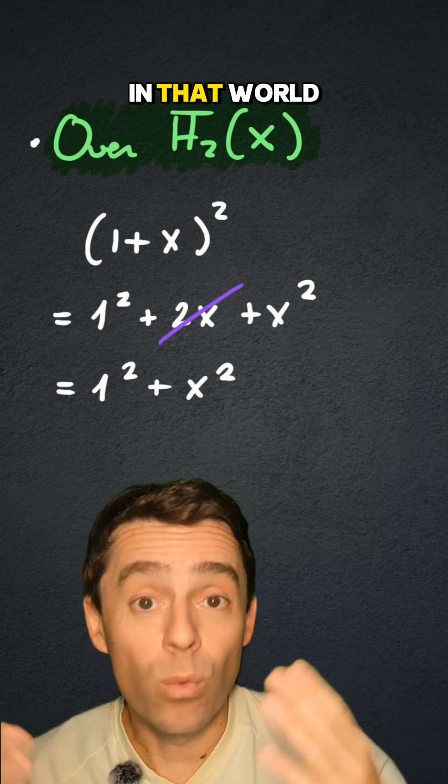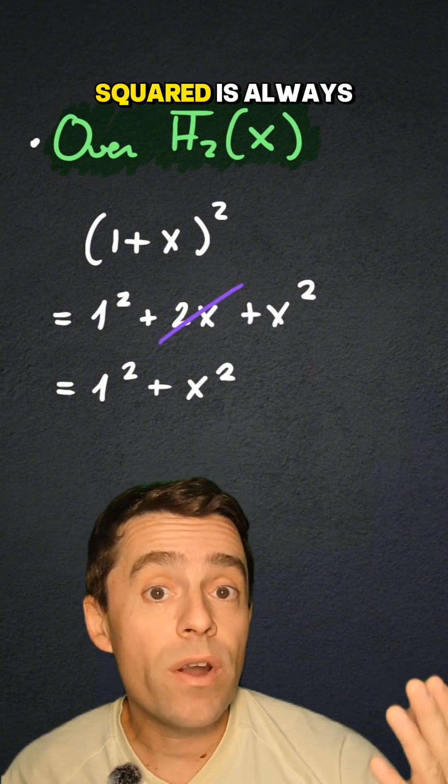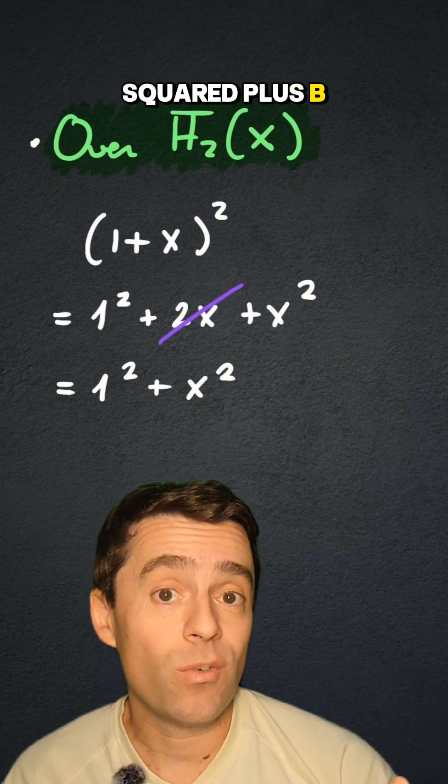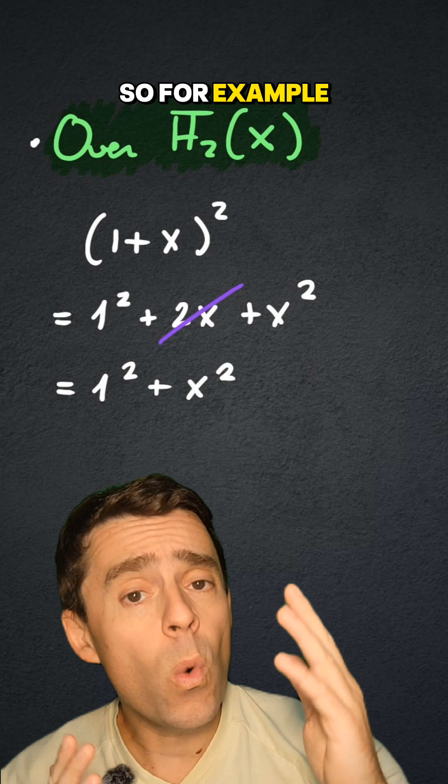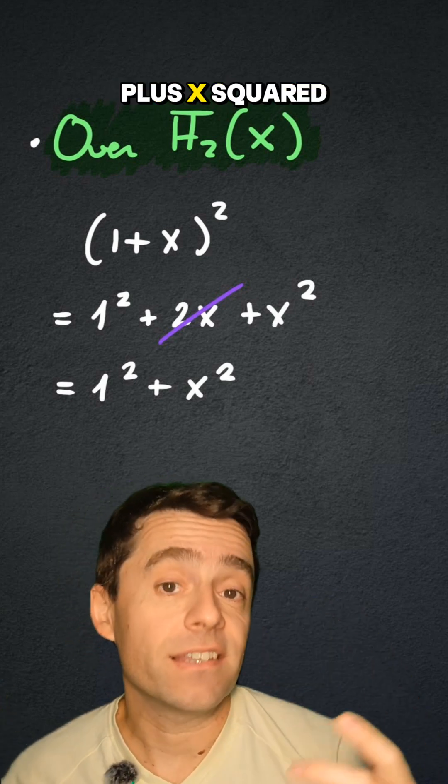And in that world, in that ring, we also have that a plus b squared is always equal to a squared plus b squared. So for example, 1 plus x squared is equal to 1 squared plus x squared.